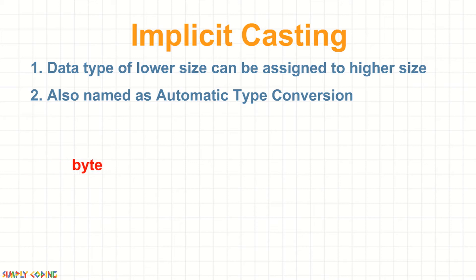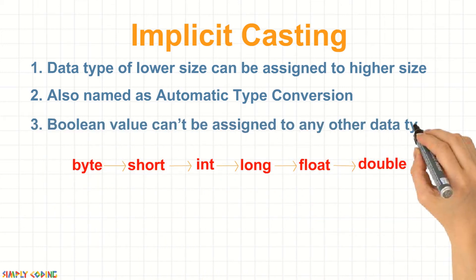So a byte can be implicitly casted to short, short to int, int to long, long to float and float to double. To note, a boolean value cannot be assigned to any other data type.